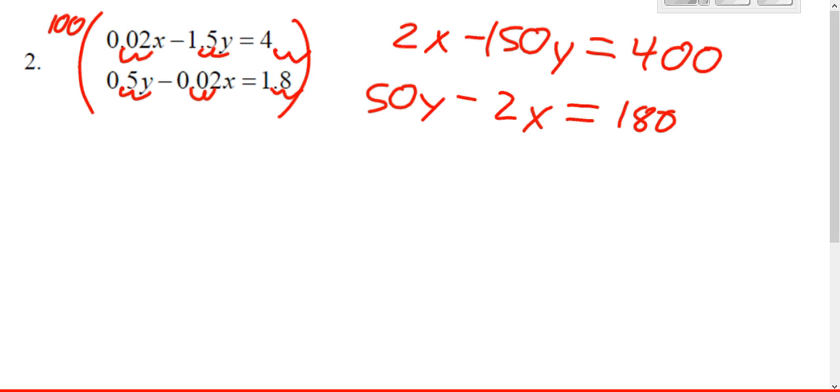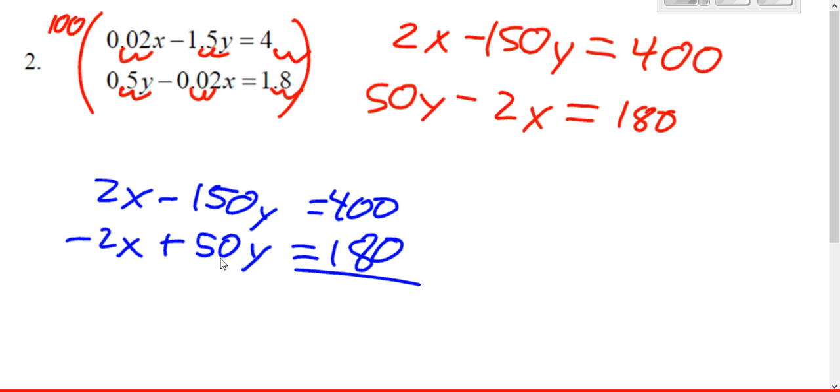So now we need to solve this new system that doesn't have decimals in it. If you look, the x's are already ready to cancel out. We just got to rewrite it so it lines up. So now it's lined up.